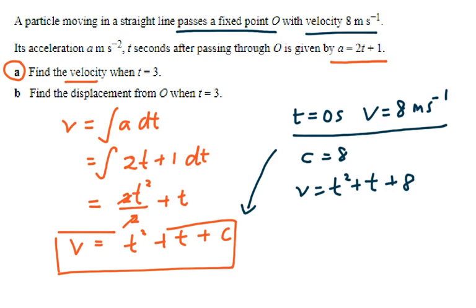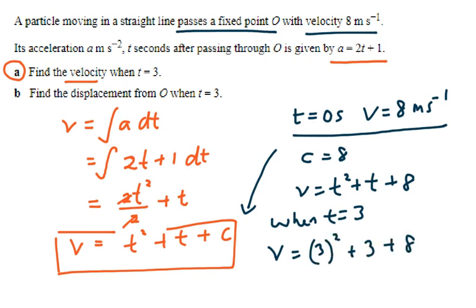Now, find the velocity when t is equal to 3. Substituting t equals 3 into t squared plus t plus 8, you will be able to get the answer as 20. Alright, we have solved Part A.